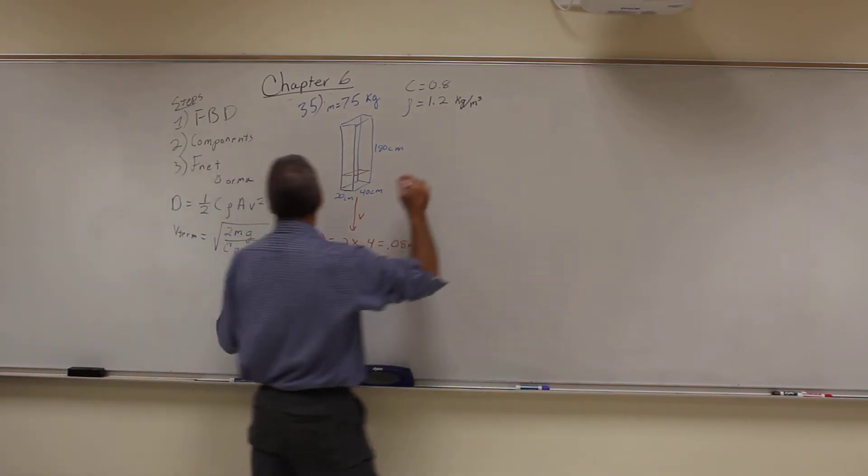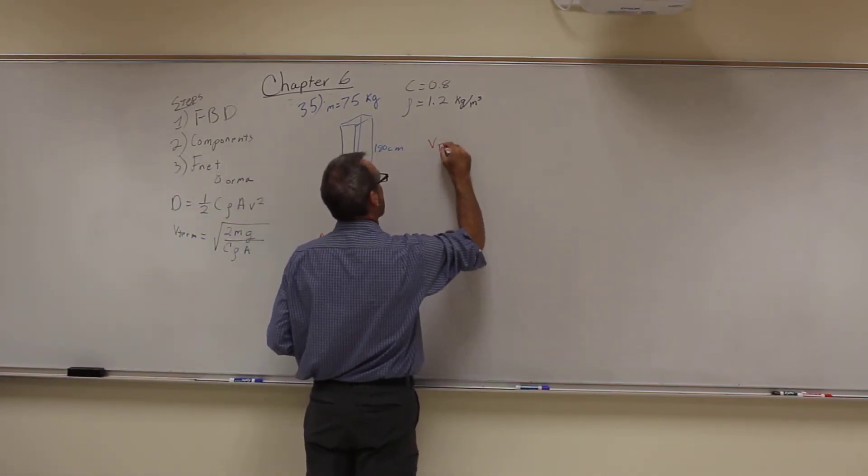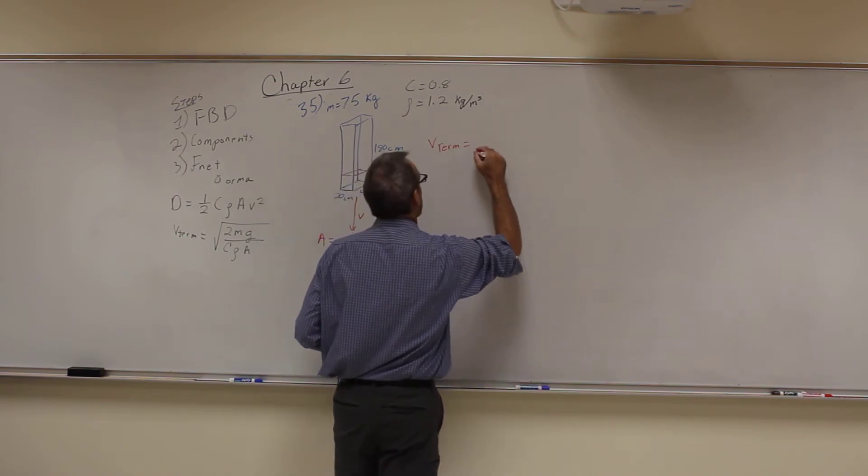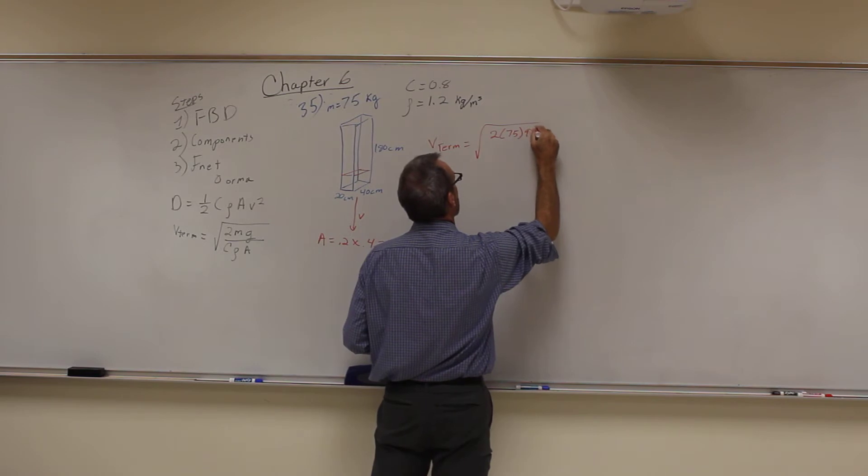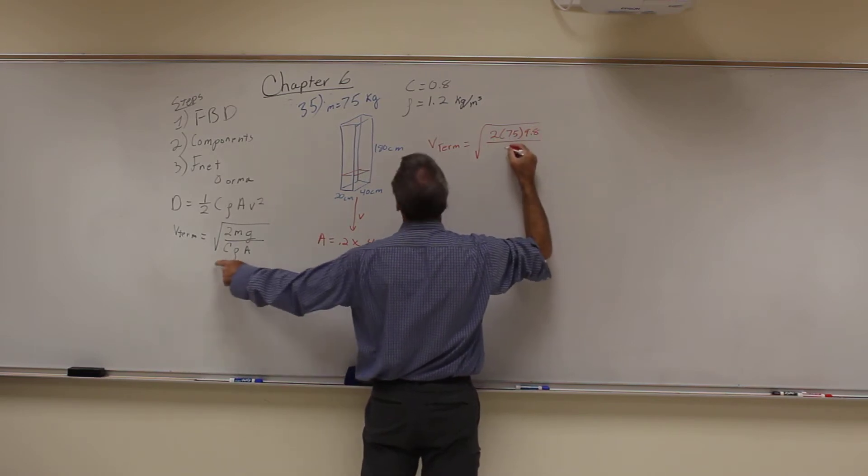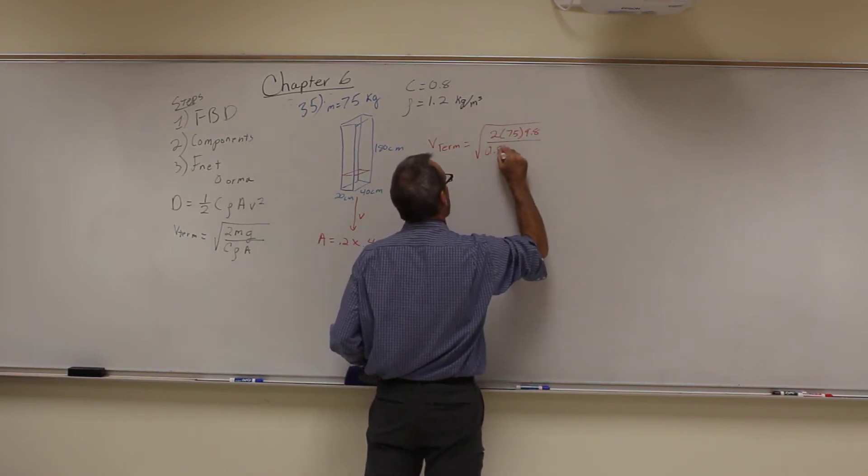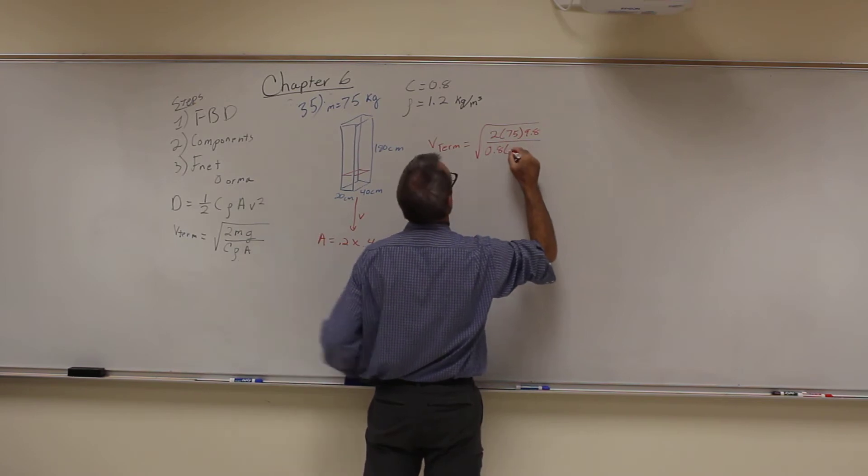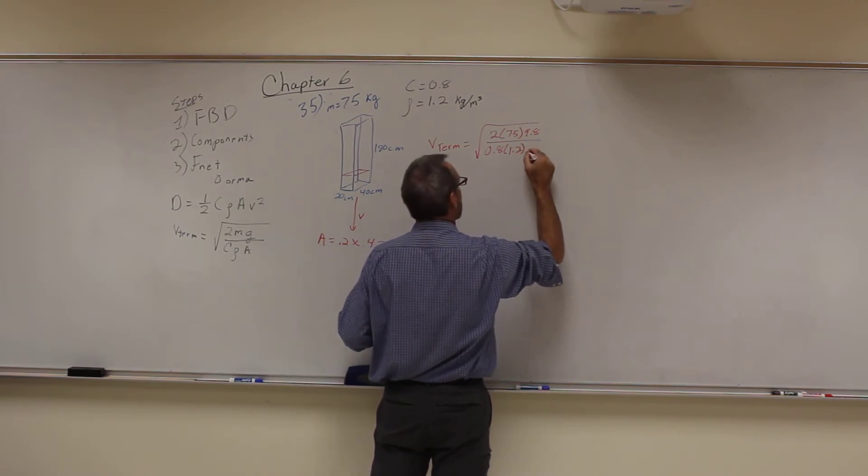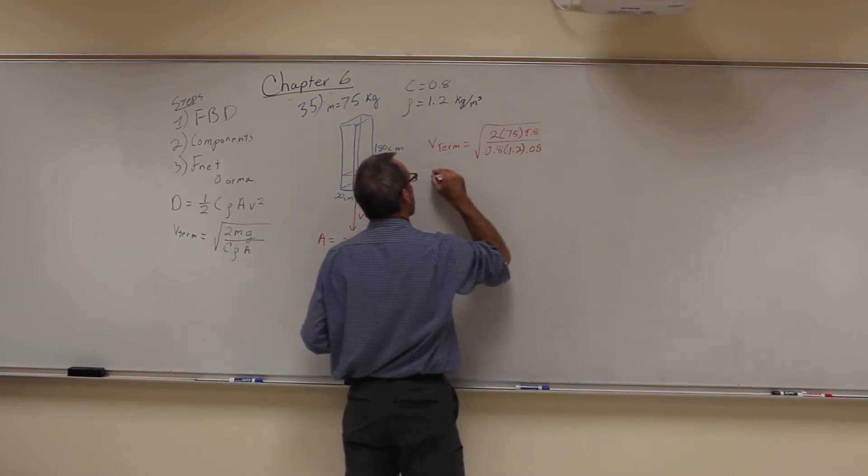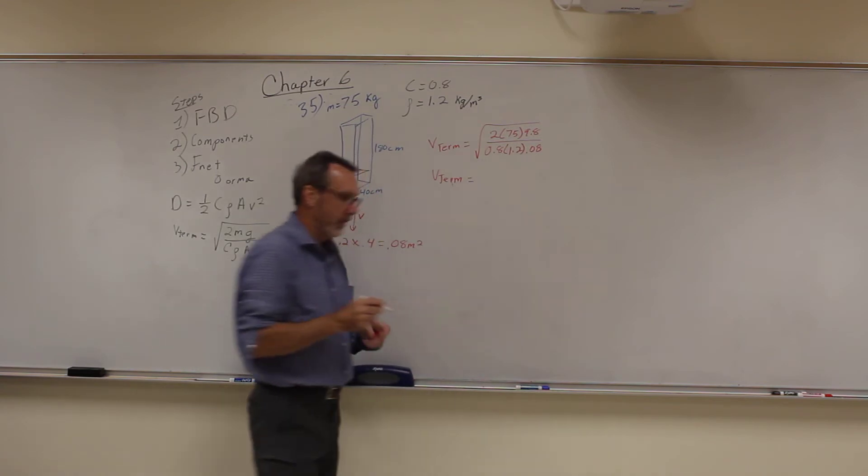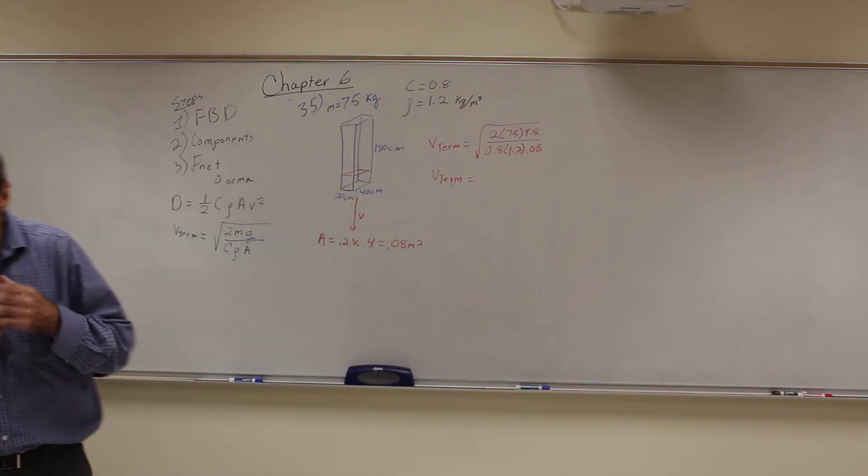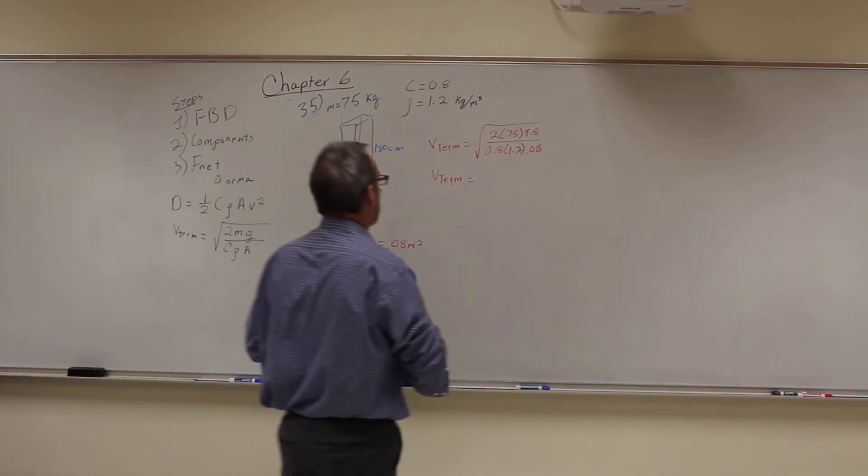When we plug that into our terminal velocity equation, we get this is equal to the square root of 2 times 75 times 9.8 divided by C, which they tell us is 0.8, times rho which is 1.2, times the area 0.08. We get that the terminal velocity is equal to 138 meters per second.